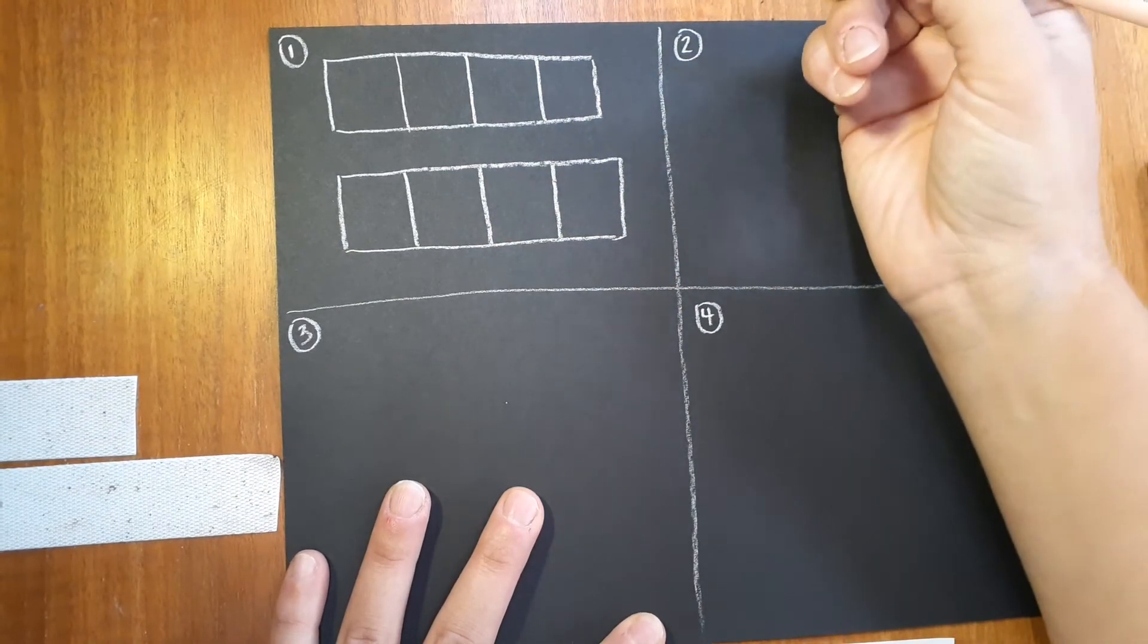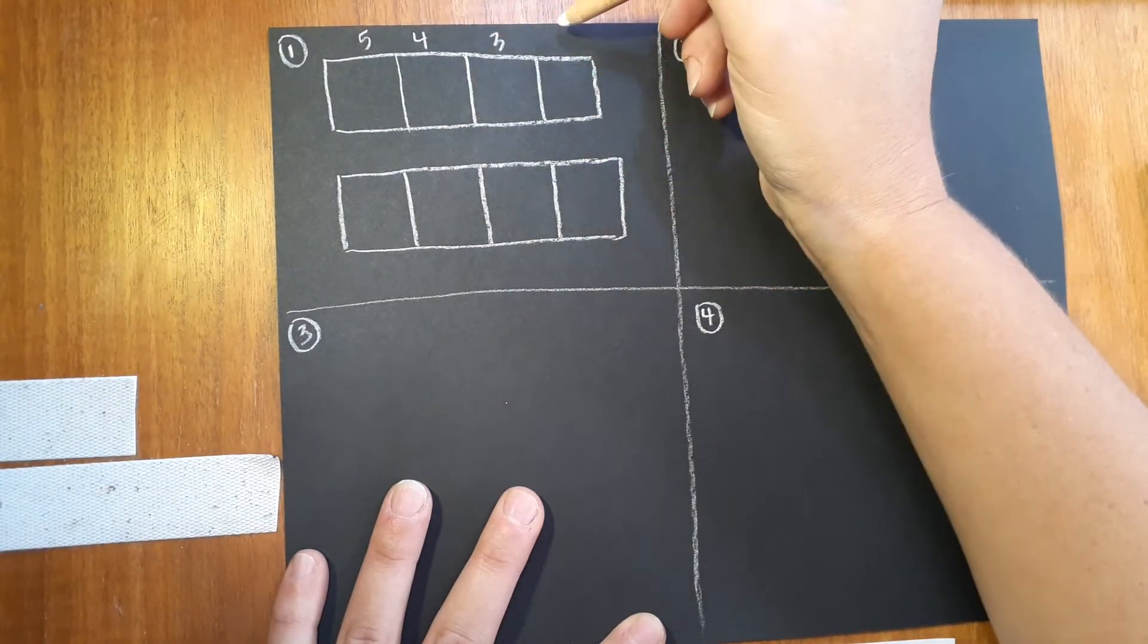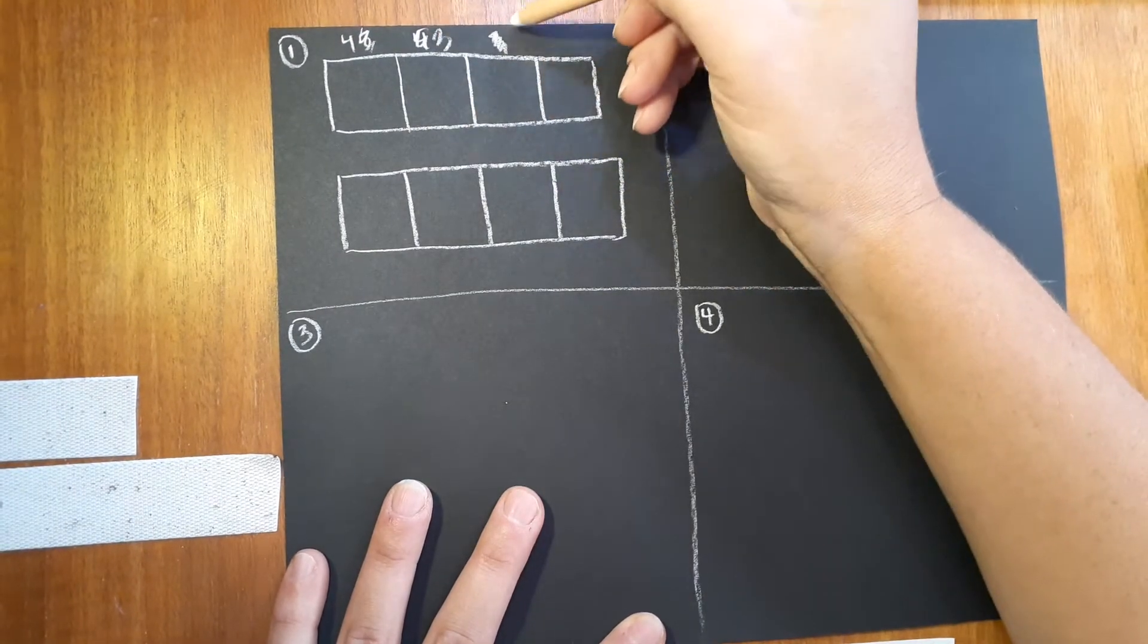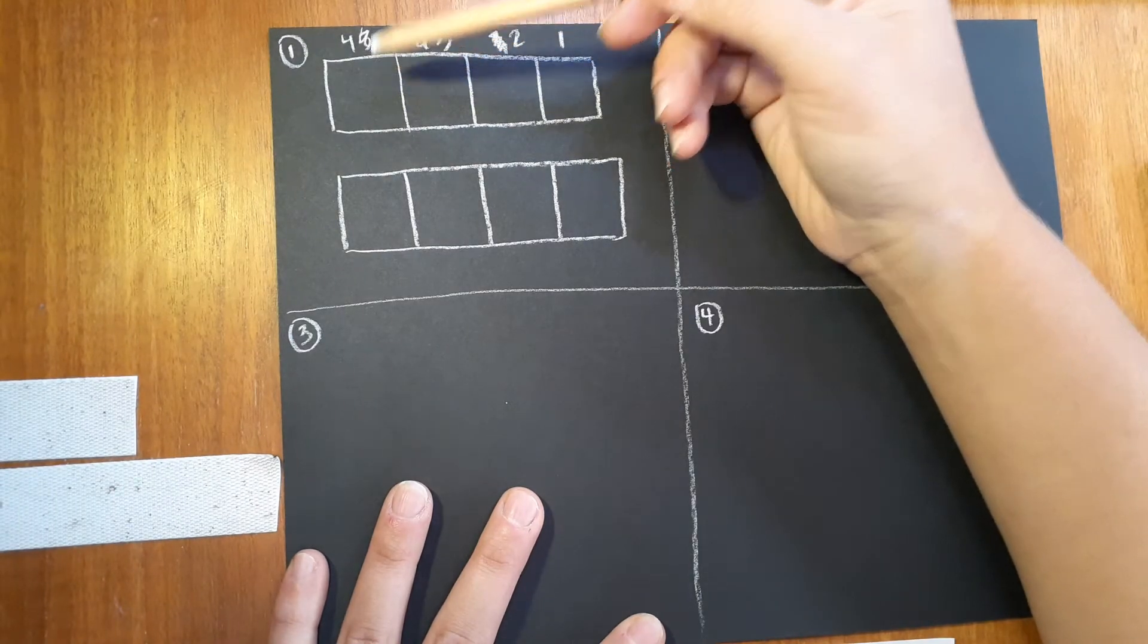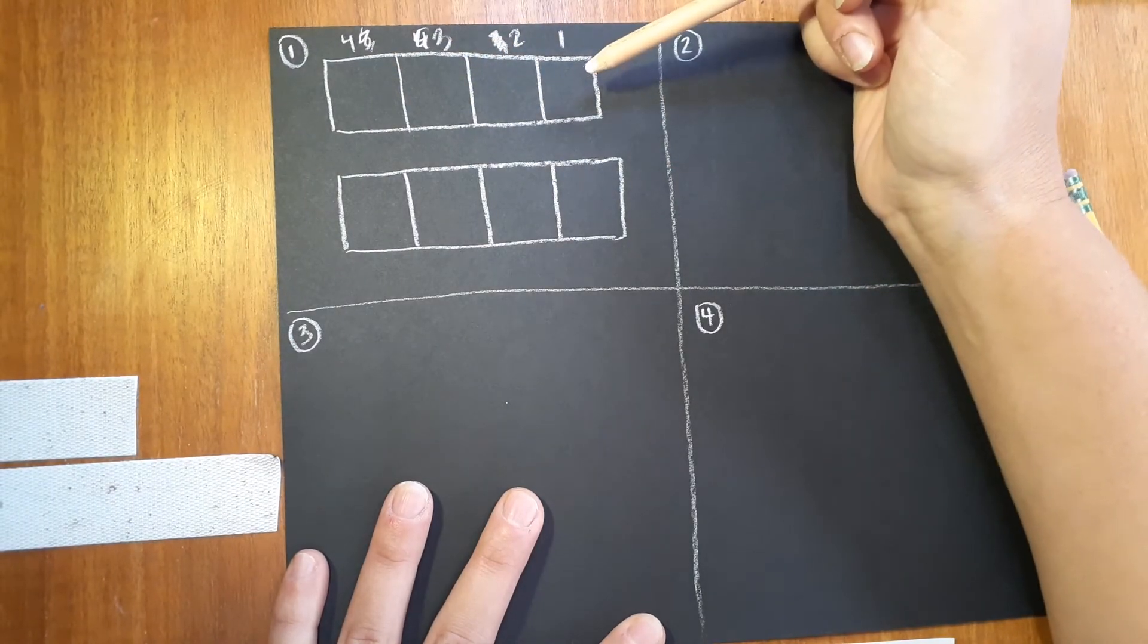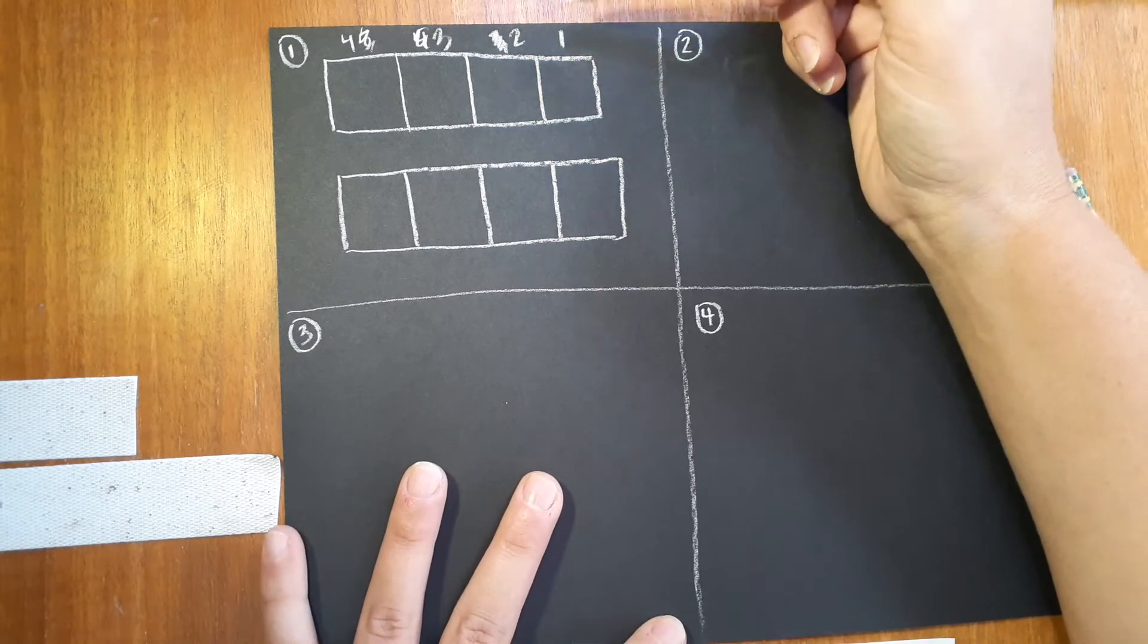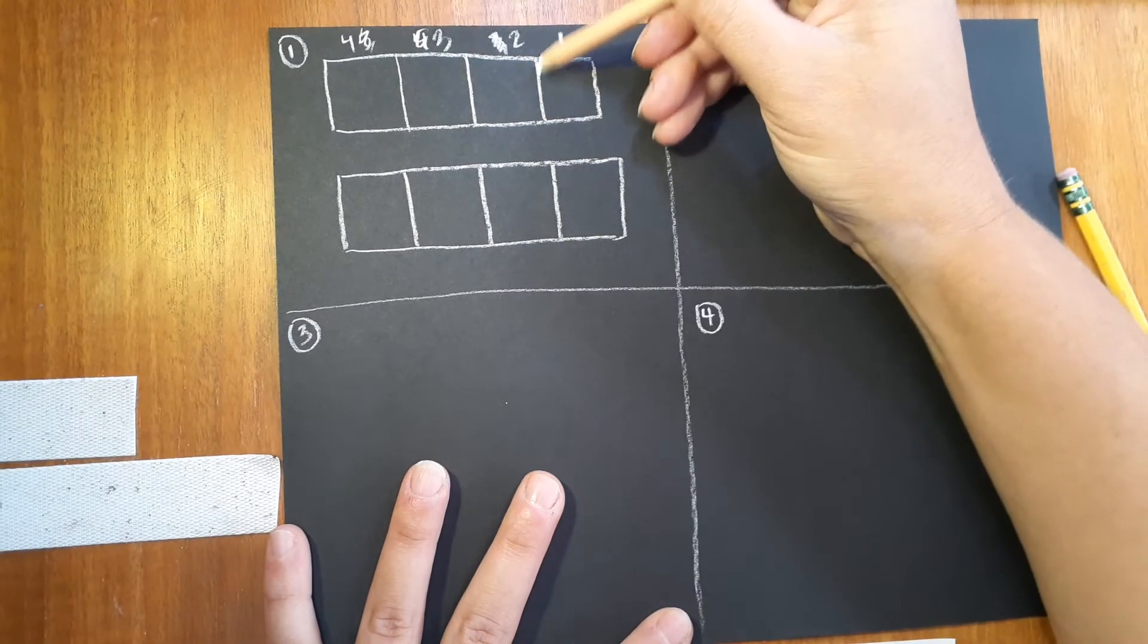Now that we have four sections, we're gonna label them four, three, two, and one. So four is going to be our darkest and one is going to be our lightest. So now we're actually gonna work a little bit backwards from what we did last time, where if we want our lightest one to be white, we're gonna have to color it in the darkest with our white pencil.